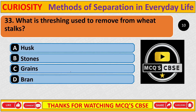Question: What is threshing used to remove from wheat stalks? Correct answer is C: Grain.